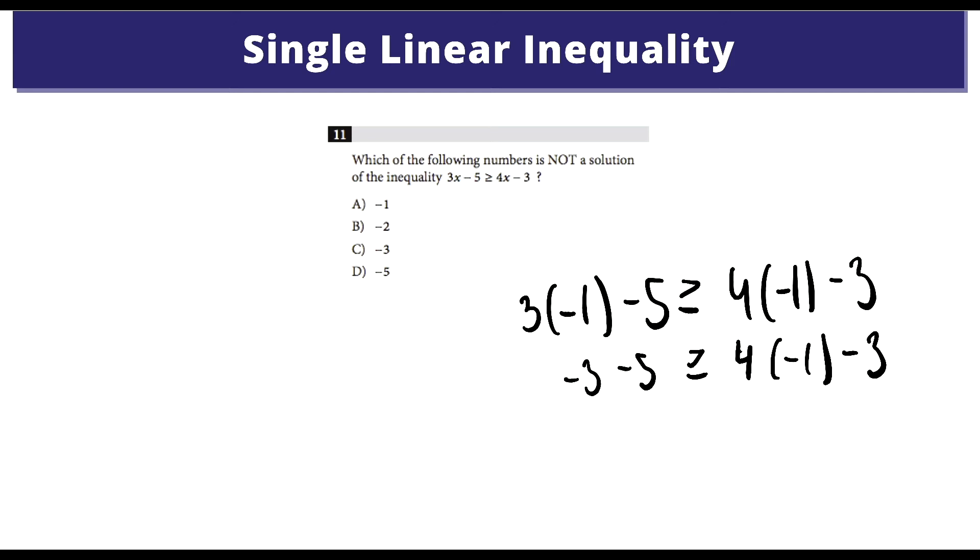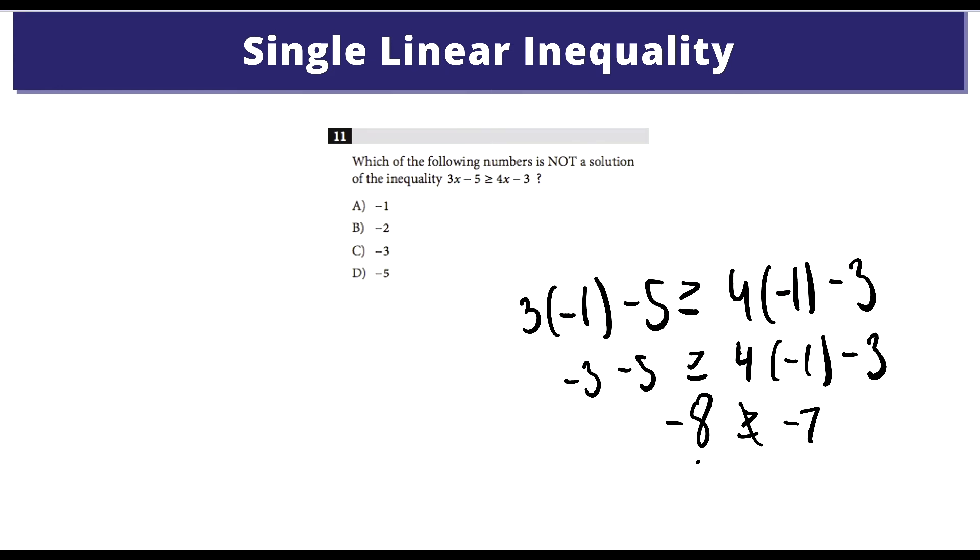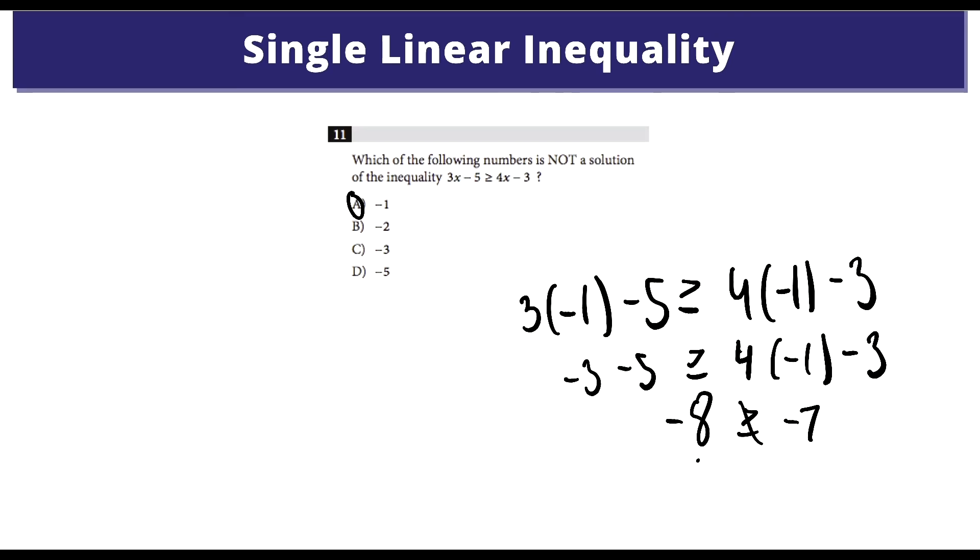This would equal negative 7 is smaller than or equal to negative 8. We know this is not true. This number, negative 8, is smaller than negative 7. So this inequality is false. Therefore, A is the one that is not a solution.